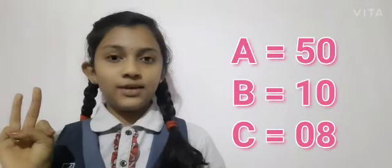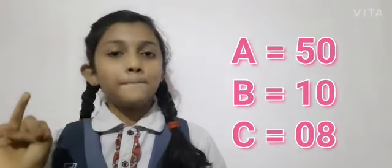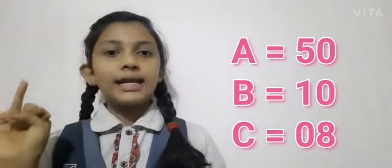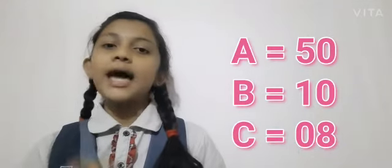So now first we will take three values: A, B and C. A as 50, B as 10 and C as 8. So we will write the number in this form, that is 50 of 10 plus 8.